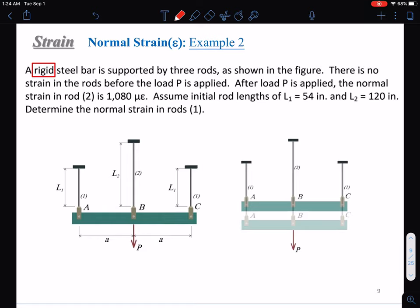So what does that mean? Rigid means that this bar will not deform in any form. It will not be elongated, not be shortened, and not be bended.